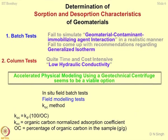Now let us discuss the methodology for determination of sorption and desorption characteristics of geomaterials and immobilizing admixtures. The most straightforward approaches are the batch test and the column test. In the batch test, you take a certain amount of geomaterial, mix it with a solution of contaminant, and allow this interaction for a long duration. However, this fails to simulate geomaterial-contaminant interaction in a realistic manner, because in nature percolation is always taking place — not just static contact. If there is an acid spill and rain comes, the acid migrates into the porous system. So batch test will not give a clear picture of what is happening in nature.